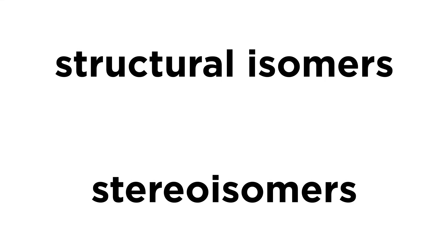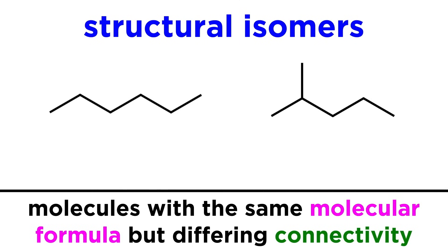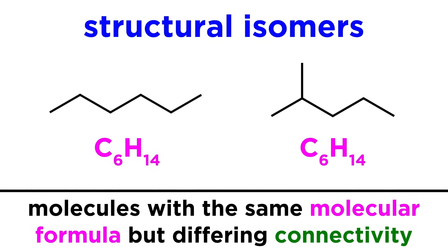Under the umbrella term of isomers, there are two main types: structural or constitutional isomers, and stereoisomers. Structural isomers have the same molecular formula but different connectivity. So if you take some alkanes with the same numbers of carbon and hydrogen atoms, but the carbon skeleton is arranged differently, those would be examples of structural isomers.